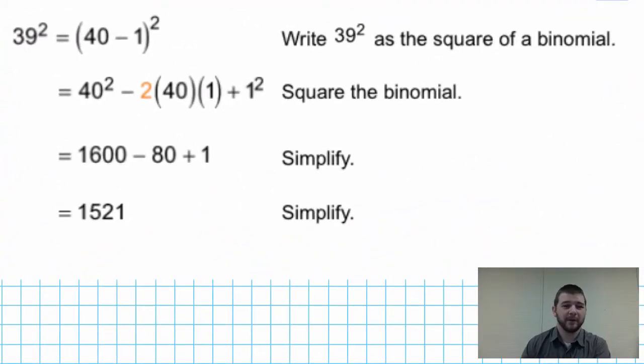39 squared can be rewritten as 40 minus 1 squared. And now it's written as a binomial, and we can apply properties that we've learned about squaring binomials. We find that 40 minus 1 squared will equal 40 squared, right, the square of our first term. Plus, and we'll get to that minus sign in just a moment.